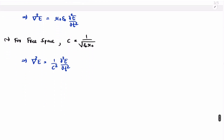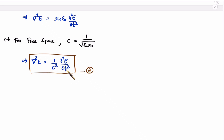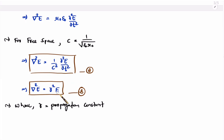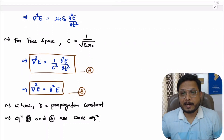So this is one form of the wave equation — call it equation A. We can also write another form where the term one by C square and del square by del T square together are considered the propagation constant. So we can also write this equation as del square E equals gamma square E, where gamma is the propagation constant. Equations A and B are both forms of the wave equation.